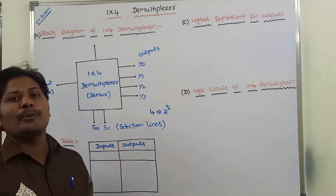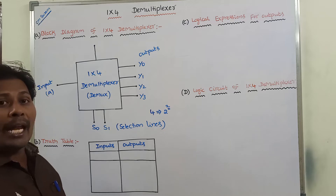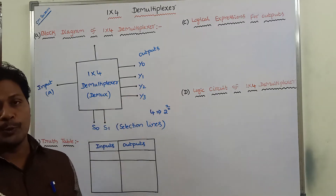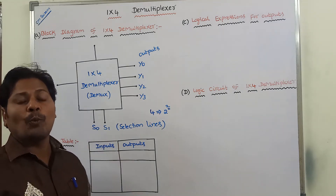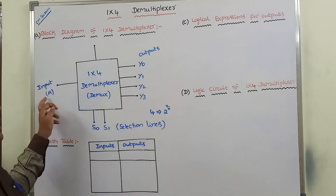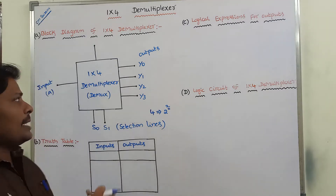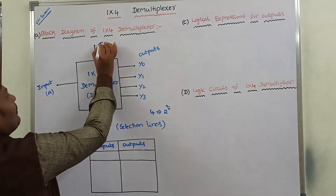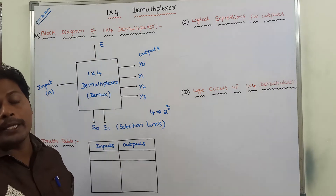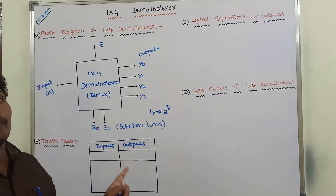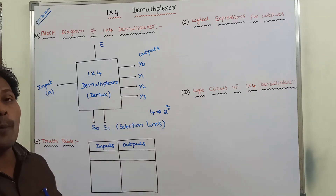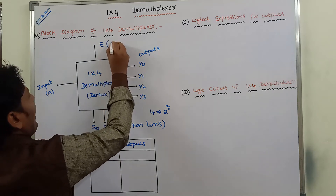Next, S0, S1 value is equal to 1, 0. The equivalent decimal value is 2, therefore Y2 output is selected and input line A is connected to Y2 output. Next, S0, S1 value is equal to 1, 1. The equivalent decimal value is 3, therefore Y3 output is selected and input line A is connected to Y3 output. This entire operation can be controlled by using the enable input. If enable input E value is equal to 1, the operation is performed. If E value is equal to 0, the demultiplexer cannot perform its operation.